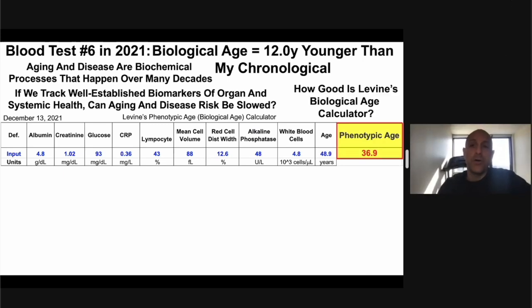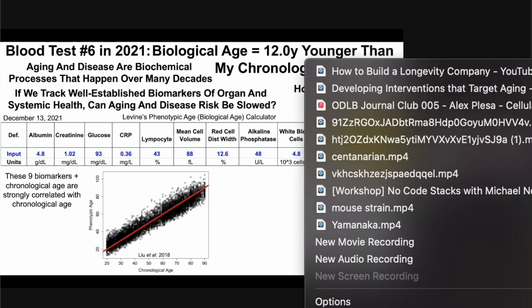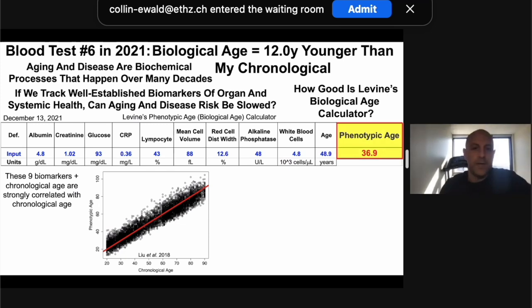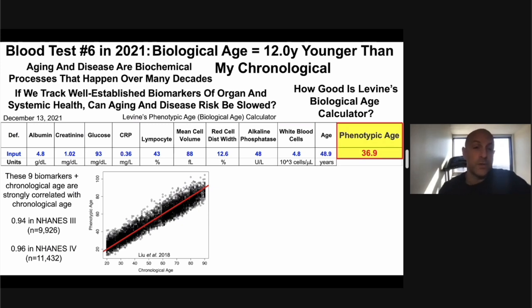So the big question: how good is this biological age calculator? These nine biomarkers and chronological age are strongly correlated with chronological age, as shown in a plot of phenotypic age against chronological age — it's almost perfectly linear. In two separate studies, NHANES 3 and NHANES 4 — U.S.-based cohorts of about 10,000 and 11,000 subjects — the correlation was 0.94 and 0.96 respectively. A correlation of 1 is perfectly linear, so 0.94 is very close to that.